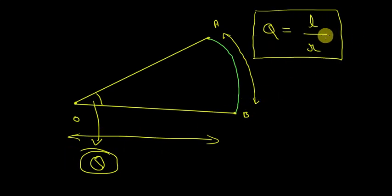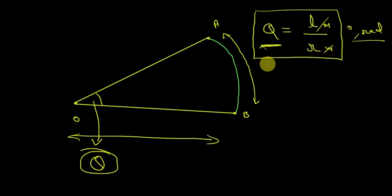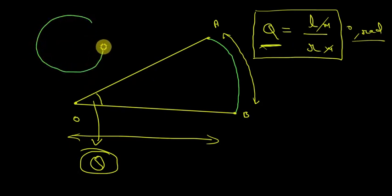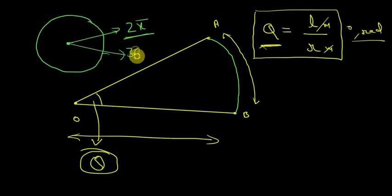Now, what is the unit of theta? The length l is in meters and R is also in meters, so theta is a unitless quantity. But we normally say degrees or radians. Why? Because theta can be measured in various ways. When we say the angle subtended by a full circle at its center is 2π, we are measuring in radians.